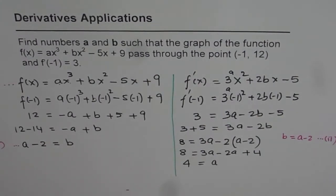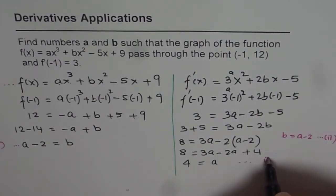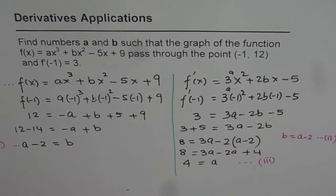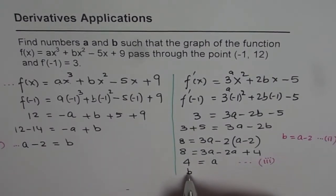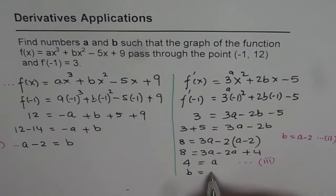So let's call this as our equation number 3. So we know a is 4. Since we know a is 4, and b is a - 2, so that gives us b equals 4 - 2. That is 2. So we get the value of b as 2.